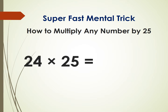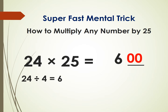Let's take a look at this example. I want to multiply 24 by 25. Just divide 24 by 4, you get 6. And then just put two zeros in front of it, so you get 600. 24 times 25 is 600.